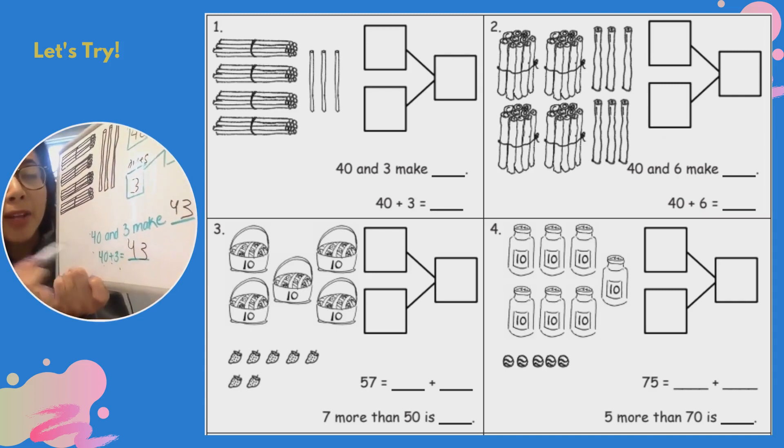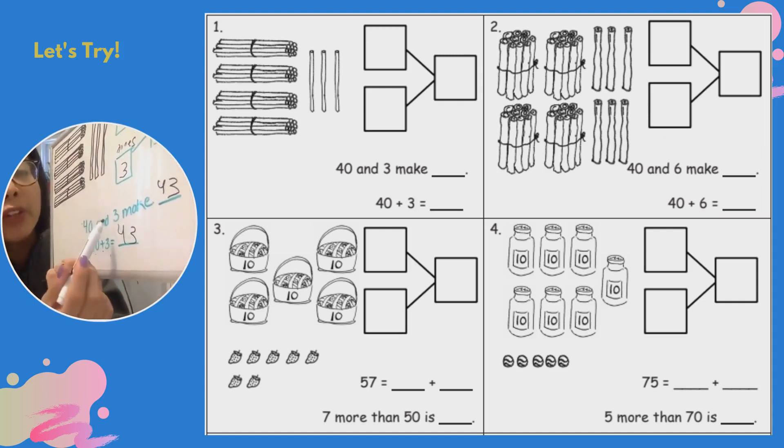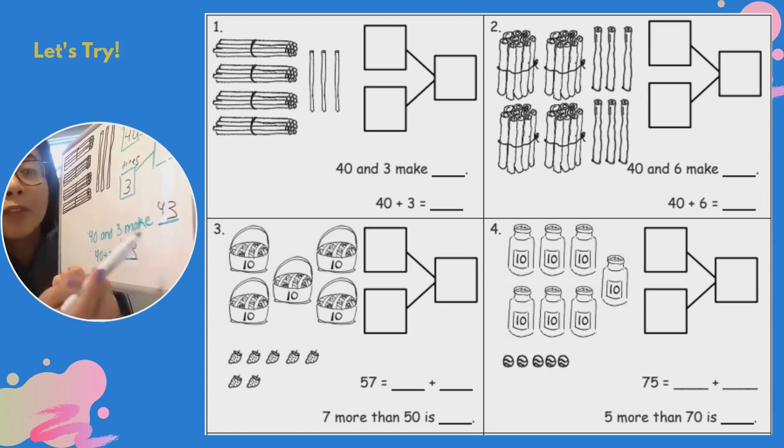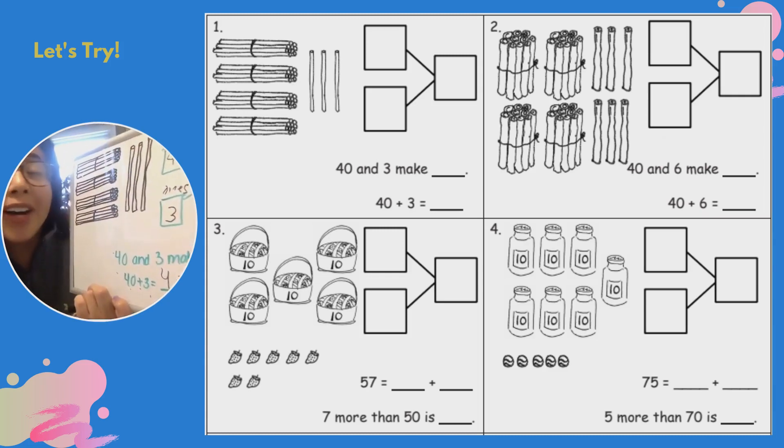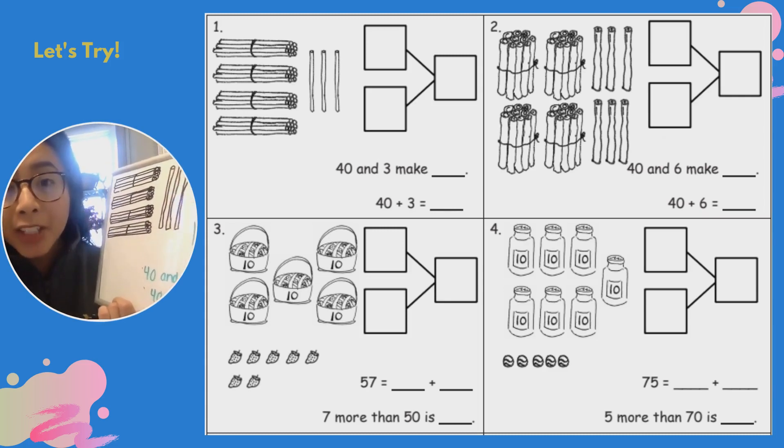So I could have written it different ways. As long as my add-ins were 40 and 3, my answer would be 43. So go ahead and try numbers 2, 3, and 4 all by yourself, and then pause the video. Come back and check your work.